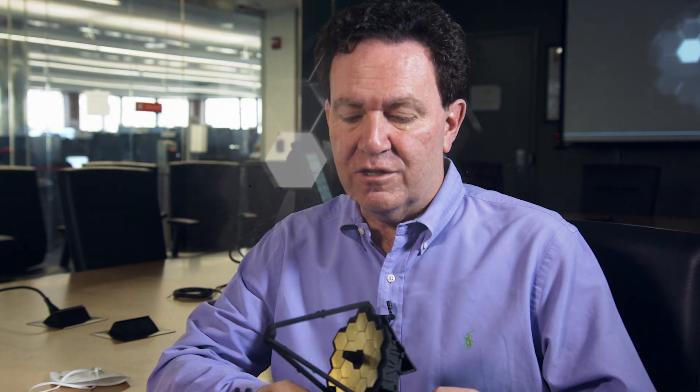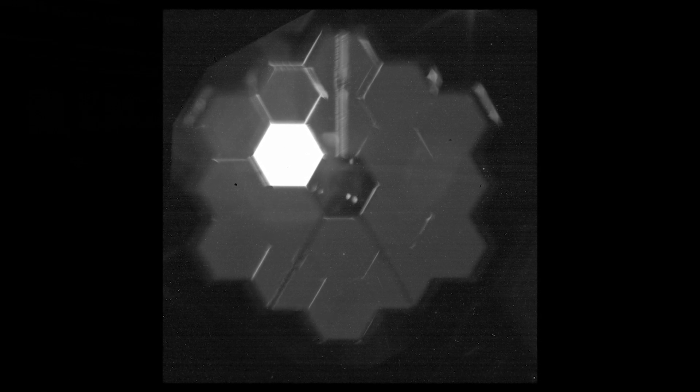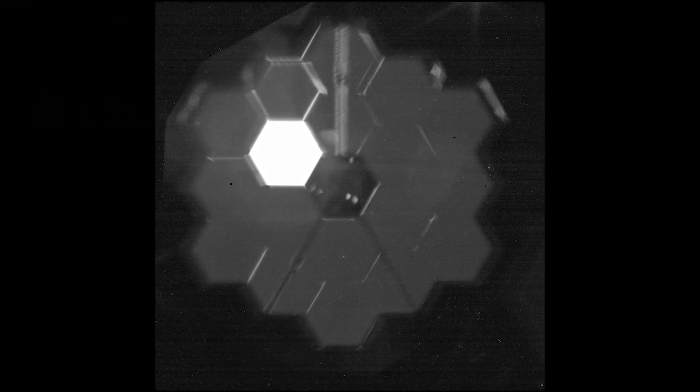We also took a selfie of the primary mirror. That helps us understand the alignment of the telescope, especially the primary mirror, to the camera itself and the instruments. There's actually a special lens in the near-infrared camera that you can put in and it allows you to take a picture of the primary mirror itself.